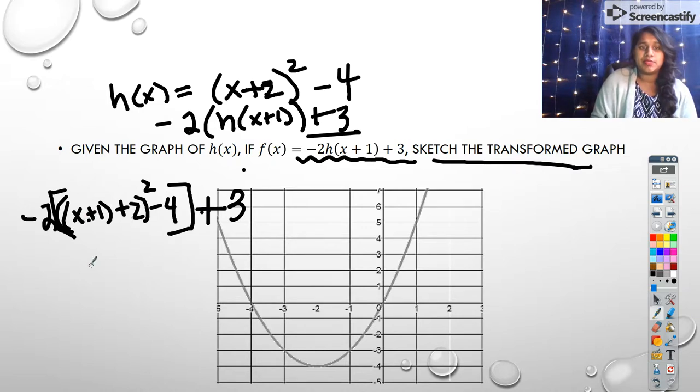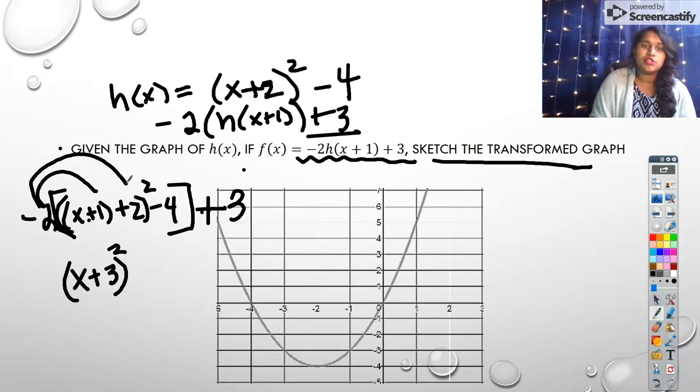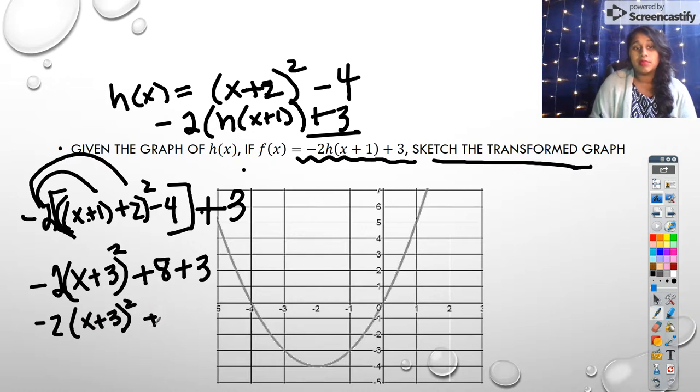this is just going to become x plus 3 on the inside, x plus 3 squared. And then that minus 4 would come down, but let's go ahead and distribute that negative 2. So the negative 2 is going to be here, but negative 2 times negative 4 is going to become positive 8. And if I drop these parentheses, that becomes plus 3. So that's negative 2 times x plus 3 squared plus 11.